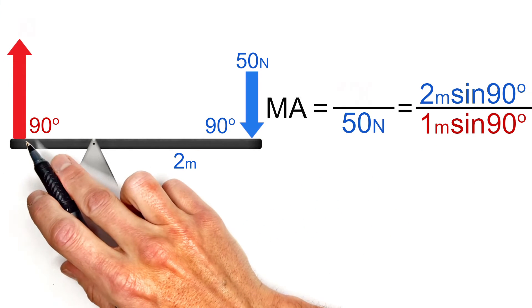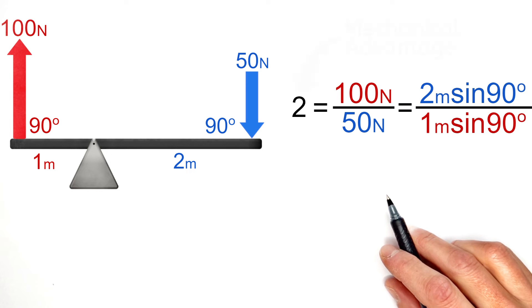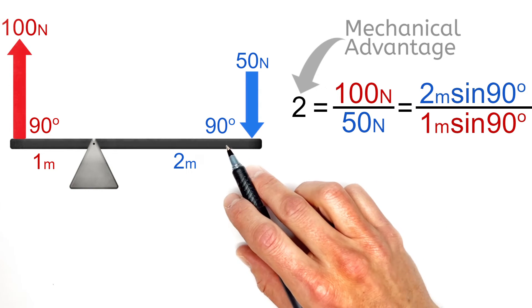We'll find the lever is going to produce 100 newtons of output force. Now most people would say that this lever has a mechanical advantage of 2, but that's a bit inaccurate.